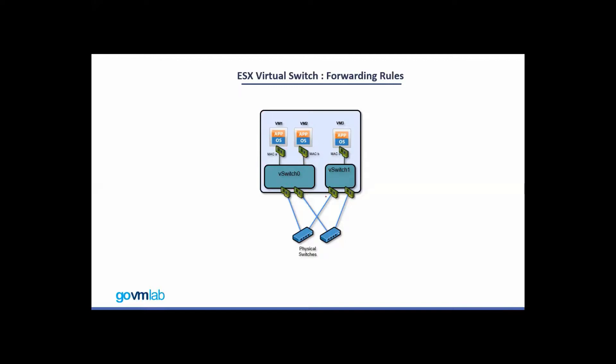Looking at the uplink side, vSwitch 0 has two uplinks and vSwitch 1 is also configured with two uplinks. The first uplink of both virtual switches goes to the same physical switch, whereas the second uplink of both virtual switches goes to another physical switch. This design provides better redundancy and failover. This is the basic vSwitch networking layout.